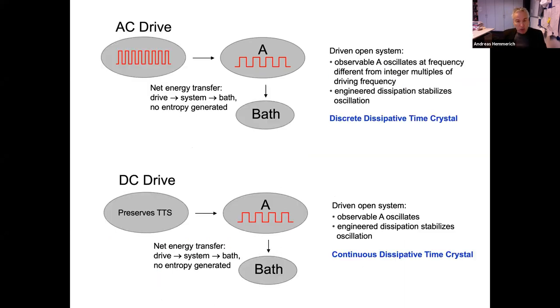So what I want to do is I want to add a bath to the system such that now there is net energy transfer from the drive to the system to the bath. However, in a fashion that no entropy is generated. And again, there's an observable of the system that oscillates at a frequency different from the integer multiple of the driving frequency. And by engineering dissipation, one can stabilize this oscillation. And that's what I want to call a discrete dissipative time crystal. And you can take this a little further or if you want a little closer to the original proposal by Frank Wilczek by replacing the AC drive by a DC drive. Still, you have net energy transfer from the driver to the bath, no entropy generated. And the system then oscillates with a system inherent frequency. And again, you have to engineer your dissipation to stabilize this oscillation. And then one could call that a continuous dissipative time crystal.